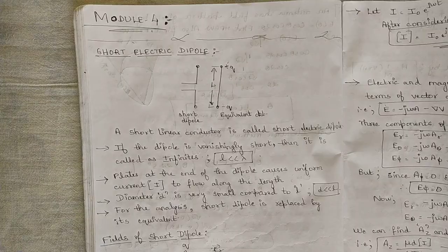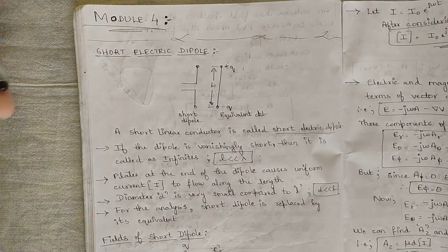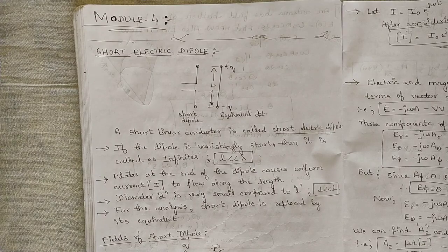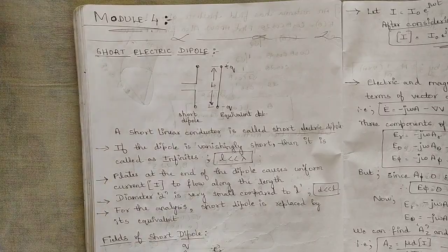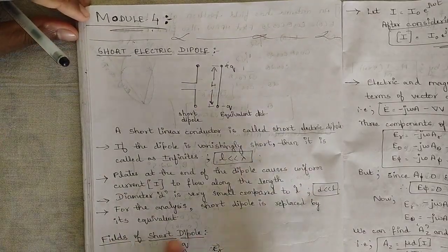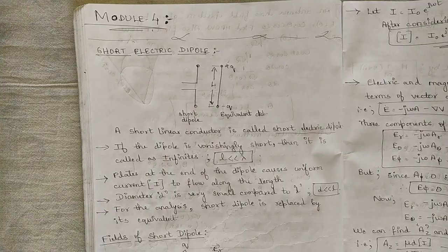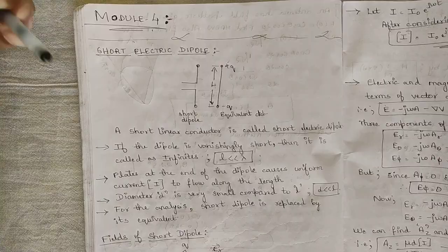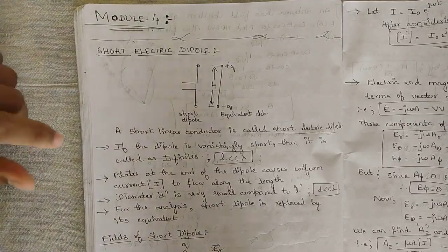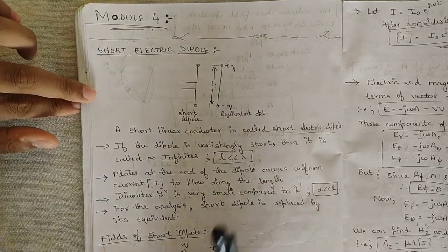Starting with the short electric dipole — in the previous module we found the effective aperture and directivity of a short electric dipole. In this module we are going to see the complete description of the short electric dipole, including all the fields involved and different expressions with respect to the spherical coordinate system. Today's topic is the introduction to the short electric dipole and its fields.